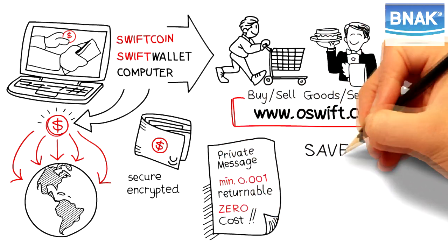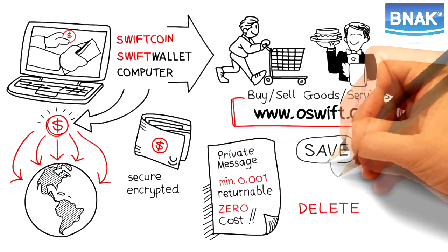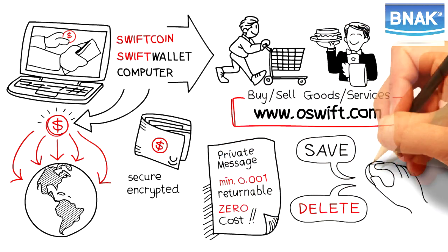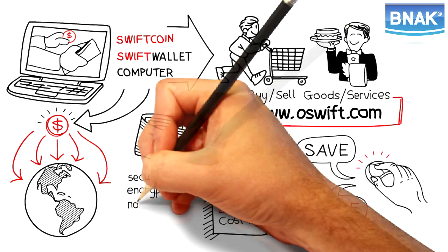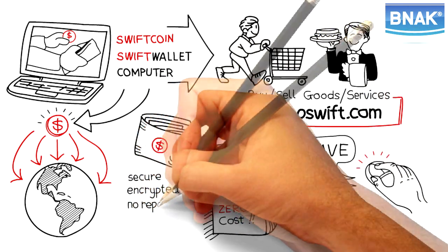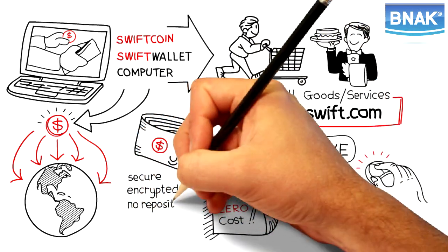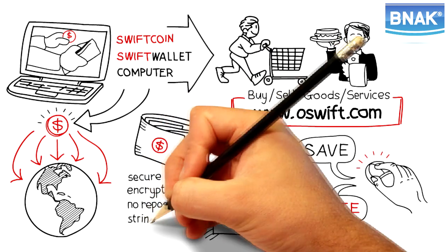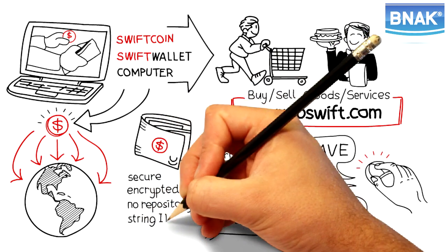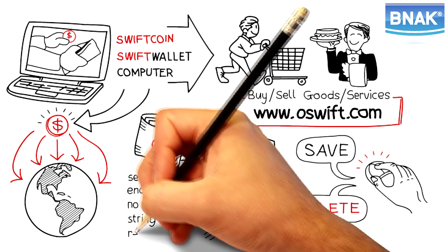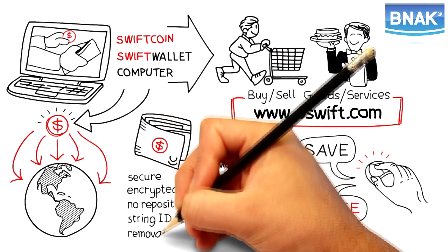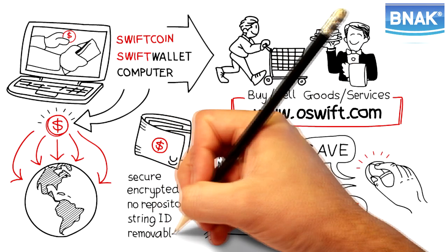After the message is received, both the text and the wallet can be saved or deleted forever with a point and click. There is no central repository of transaction data. The wallet itself is identified only by a string, and wallets can be easily moved off your device to any other device, a thumb drive, or deleted without a trace.